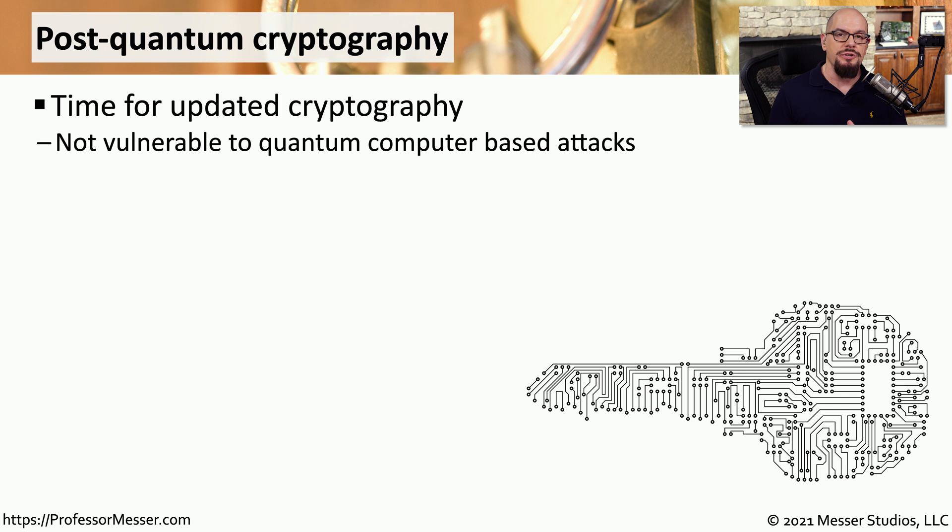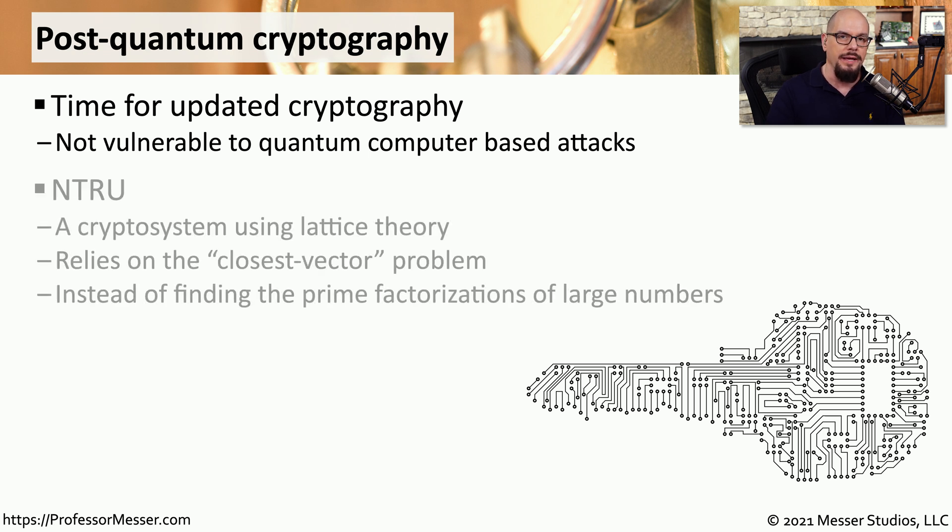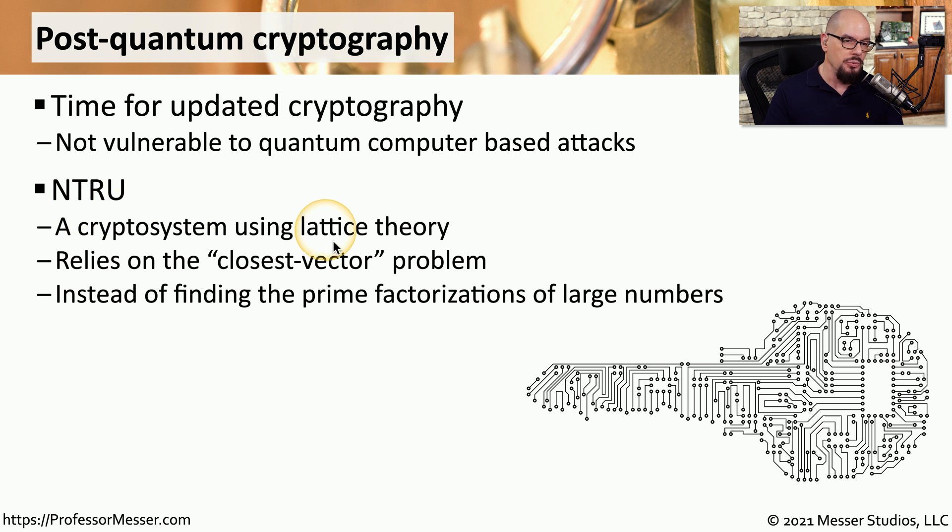Fortunately, researchers are already looking at new ways to provide cryptography in this new world of quantum computing. One of the ways to do this is with NTRU. This is a new way of performing encryption with quantum computing that, instead of using very large prime numbers, uses a closest vector problem. This is a problem that is still difficult for quantum computing to calculate and would be a very viable way to provide encryption.